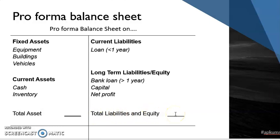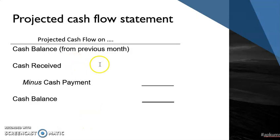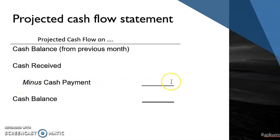Next we look at the cash flow statement, which shows the cash received and payments every month. We show the cash balance from last month, add the cash received for that month — which normally refers to sales — then subtract cash payments, which are the costs and expenses paid. This gives us the cash balance for the month. Based on this, we can predict whether the company has enough money to pay its expenses each month, which helps small companies be careful with expenses and avoid losses.